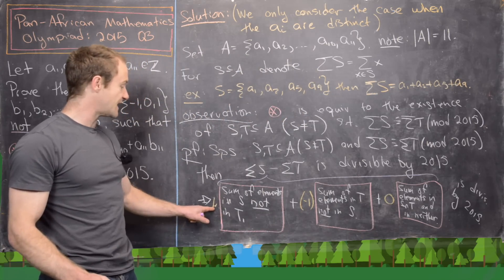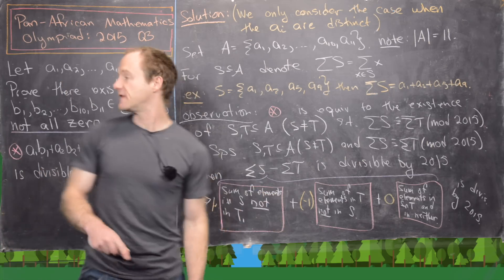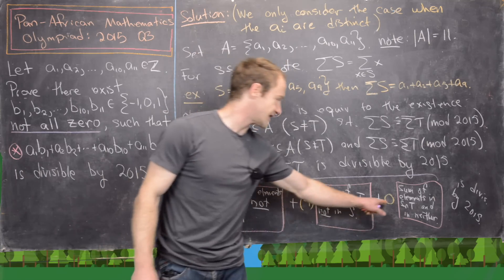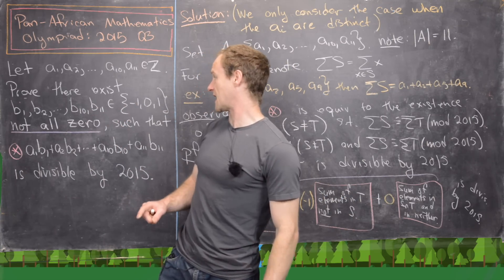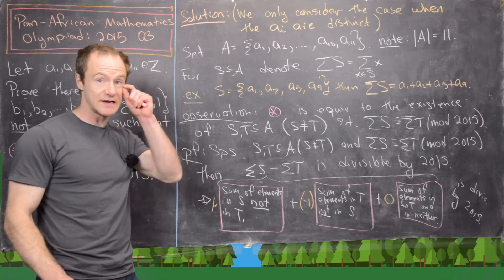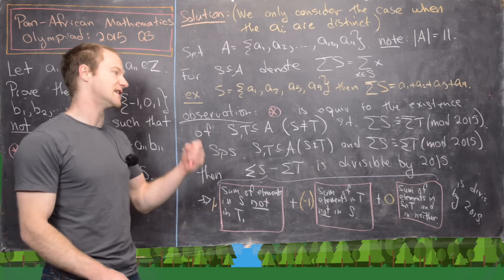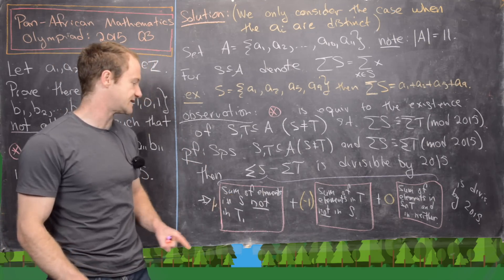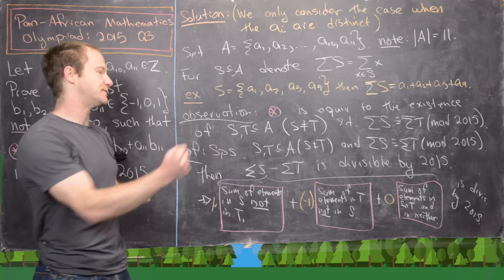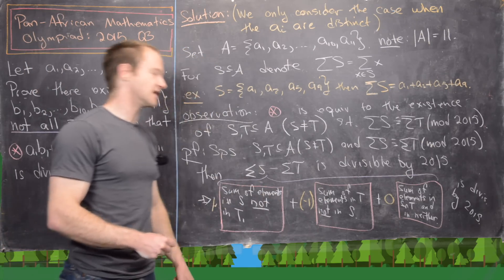We can think of these as the B_i attached to the +1 weight, these as the B_i attached to the -1 weight, and the 0s as the B_i attached to the 0 weight. Furthermore, not all of the B_i are zero because S and T are not the same subset, which means there definitely exist elements of S not in T and/or elements of T not in S. This does not preclude S being a subset of T or vice versa, but either way at least one of these collections is non-empty.